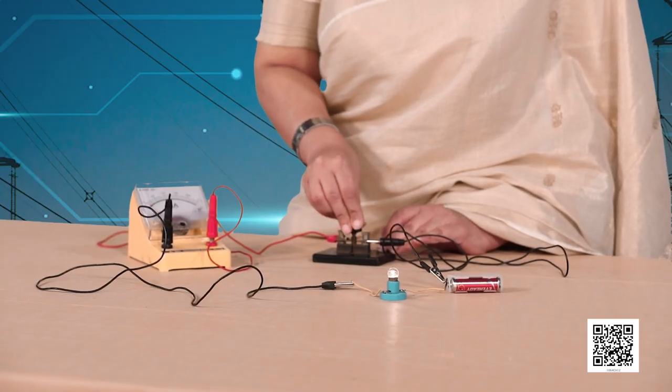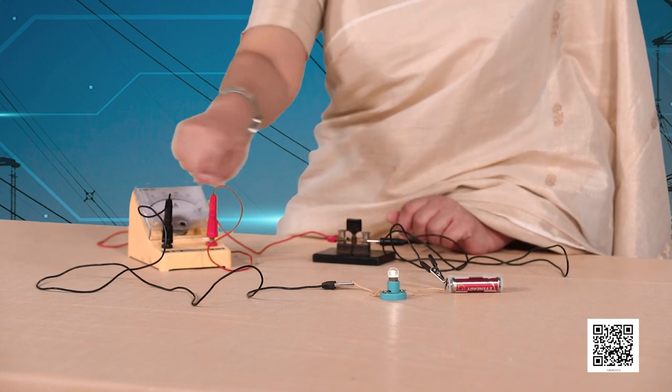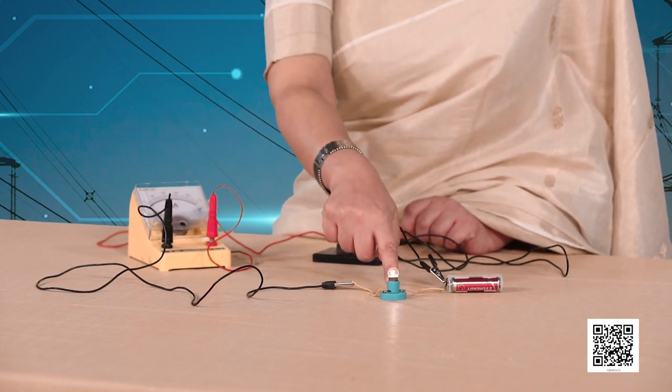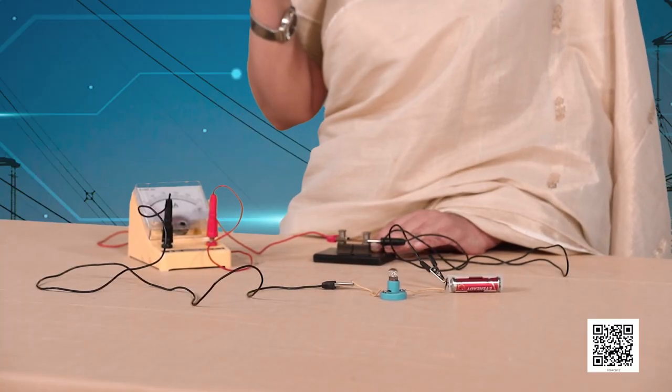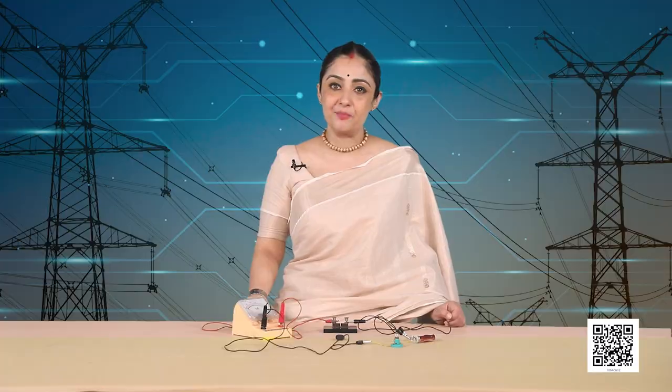If I plug in the key, the circuit gets completed and the bulb starts glowing. Note, if the circuit is broken anywhere — the switch of a torch is turned off, or in this case I plug the key out — the current stops flowing in the circuit and the bulb does not glow. Electric current is expressed by the amount of charge flowing through a particular area in unit time. It is the rate of flow of electric charges.